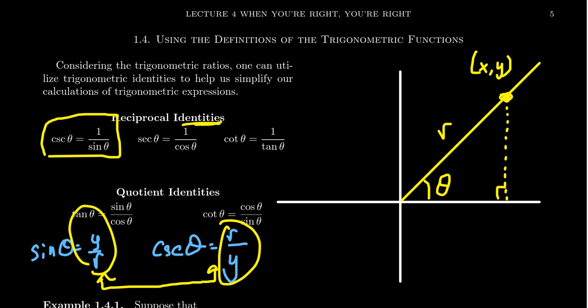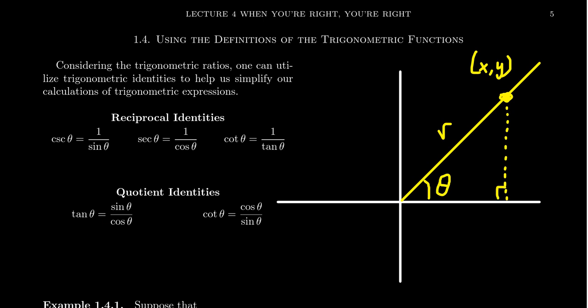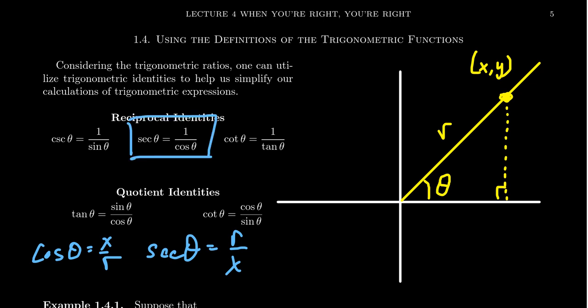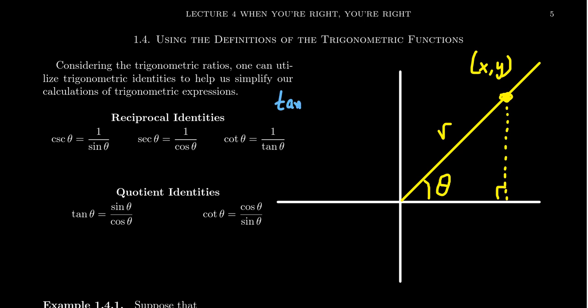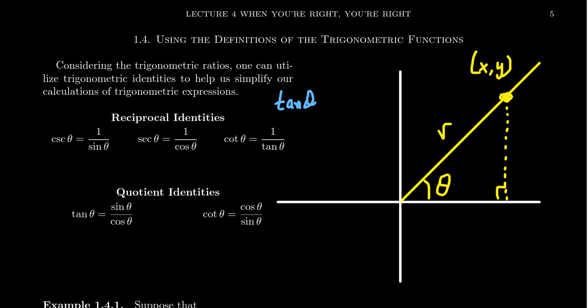What we mean by identity is that cosecant of theta will always equal 1 over sine theta for any choice of angle theta, because these ratios are defined to be reciprocals of each other. Another example: cosine is defined to be x over r, and secant is defined to be r over x, establishing that these are also reciprocals of each other — secant is just cosine flipped upside down. Similarly, tangent is y over x and cotangent is x over y, so they're reciprocals of each other. Those are the three reciprocal identities.